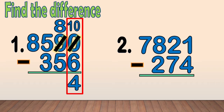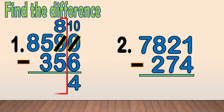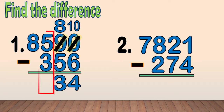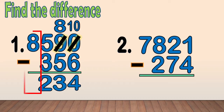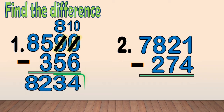Next, we subtract the tens: 8 minus 5 equals 3. Then, we subtract the hundreds: 5 minus 3 equals 2. And bring down the thousands digit 8. Our final answer is 8,234.